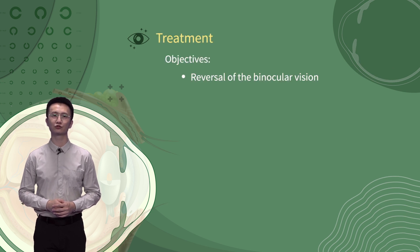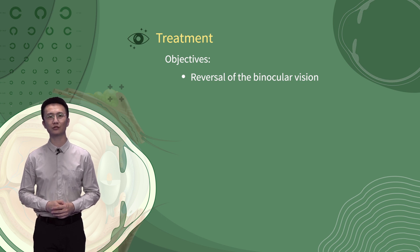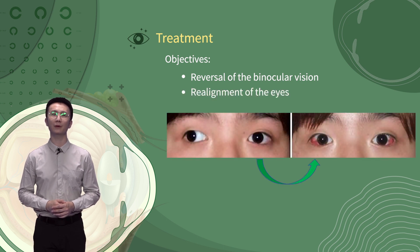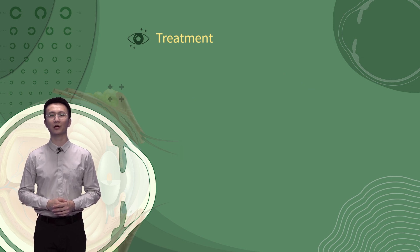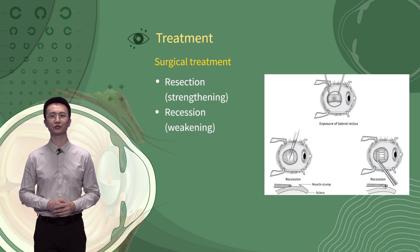The main objectives of strabismus treatment include the following: reversal of deleterious sensory effects of strabismus such as amblyopia, suppression, and loss of stereopsis; and alignment of the eyes by medical or surgical treatment. Besides binocular visual function, the psychological and cosmetic benefits of having straight eyes cannot be overestimated.